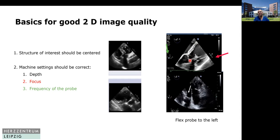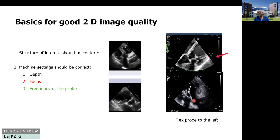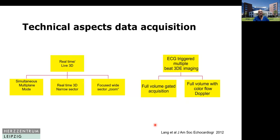Despite all these 2D imaging improvements, transgastric views are not good for three-dimensional display of the aortic valve, because the depth doesn't change — so it's always relatively low in the 3D image, meaning the quality of the 3D image is not ideal. Looking at the technical aspects during 3D acquisition: you have real-time live 3D, either in narrow sector or sector zoom mode, or you have multi-plane or — for Philips — the x-plane display of two-dimensional images. And you have EKG-triggered multiple-beat acquisition, either with or without gating.